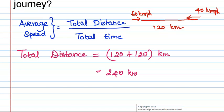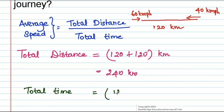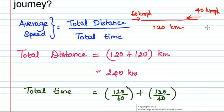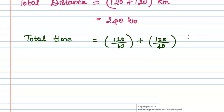Now let us find the total time taken. We know that time is equal to distance divided by speed. He goes at 60 kilometers per hour to cover 120 kilometers, so the time taken to go is 120 divided by 60. He also comes back at 40 kilometers per hour, so the time taken to come back is 120 divided by 40.